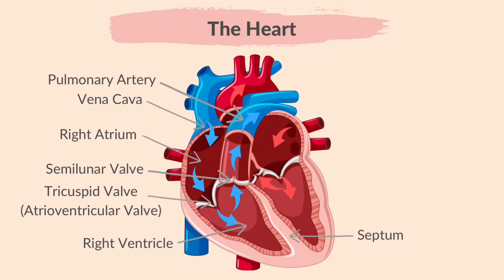This is the septum. It is a muscle wall that separates the two sides of the heart, and therefore prevents the mixing of oxygenated and deoxygenated blood.